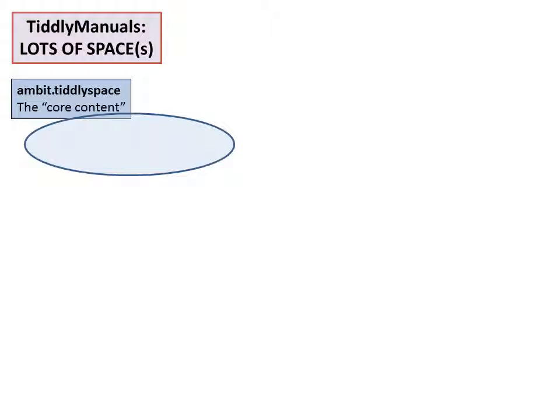This is really to explain the process of what we call manualising. The manual that we use in Ambit and in Tiddly manuals in general is what we call a wiki. A wiki is just a collection of web pages around a common theme, and in particular, what makes it a wiki is that it can be edited by users.